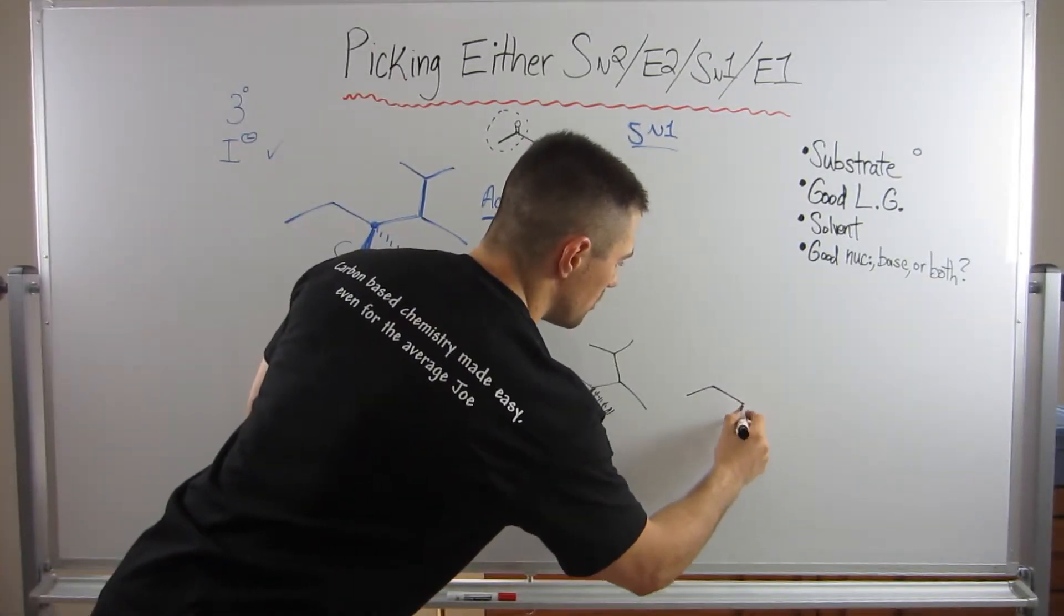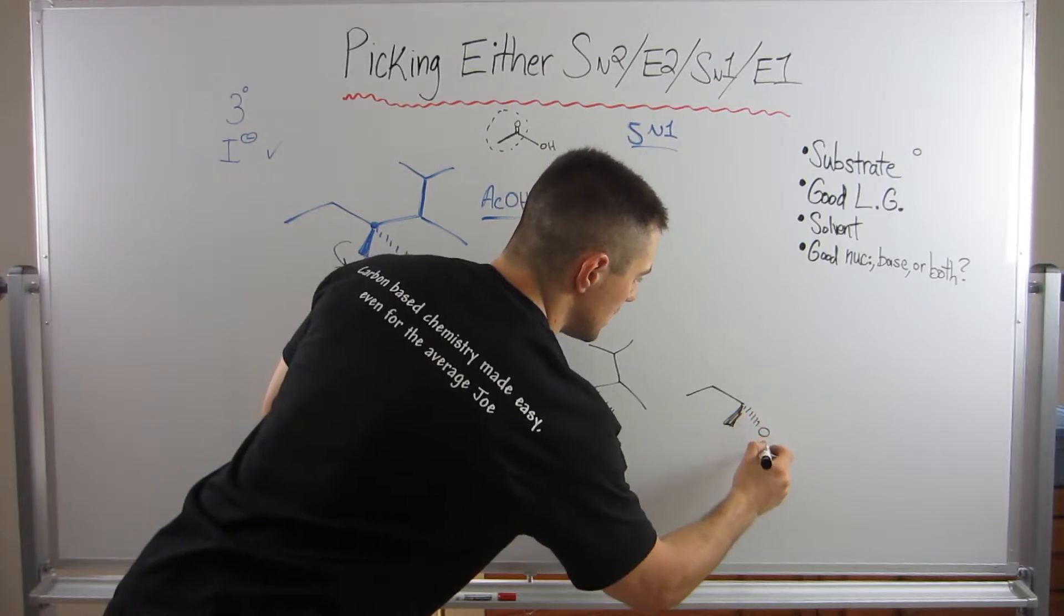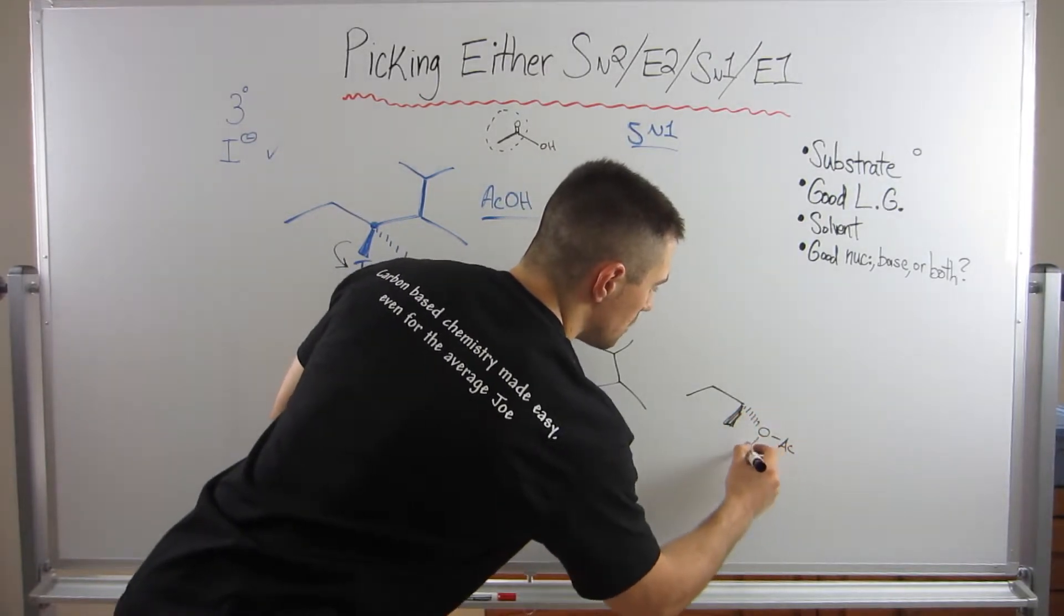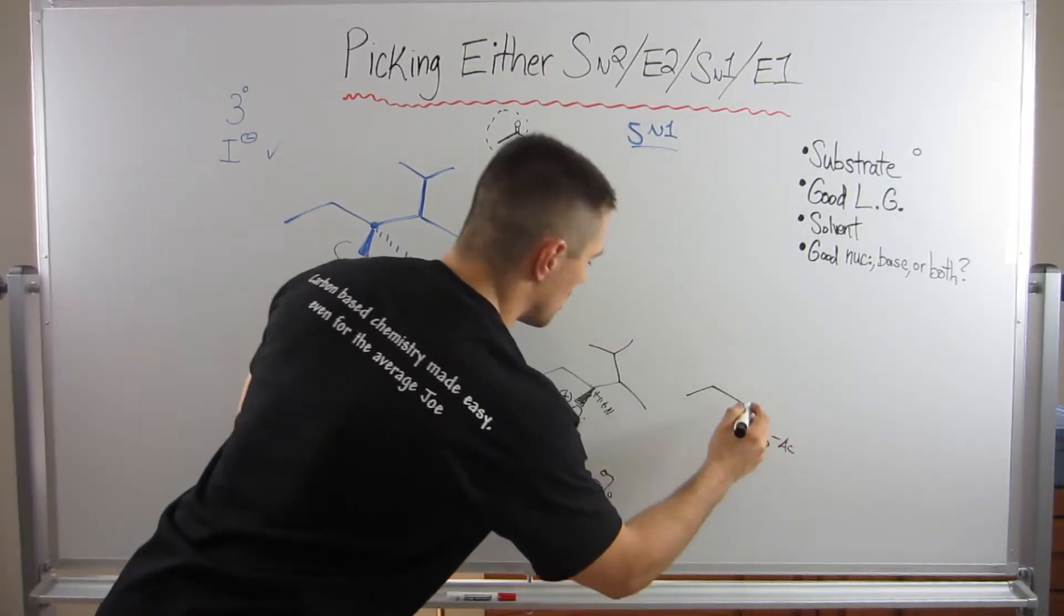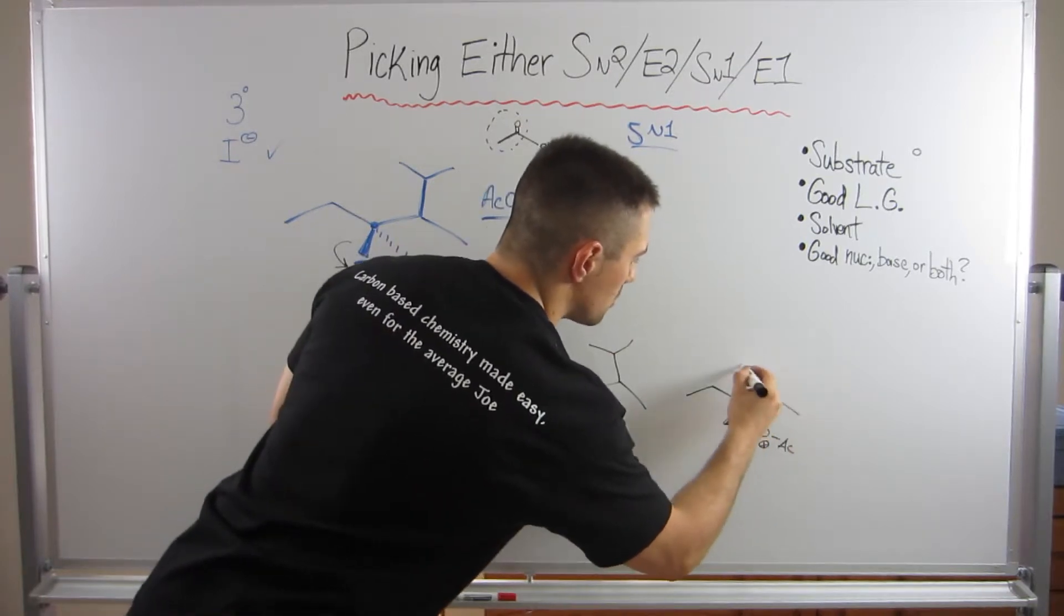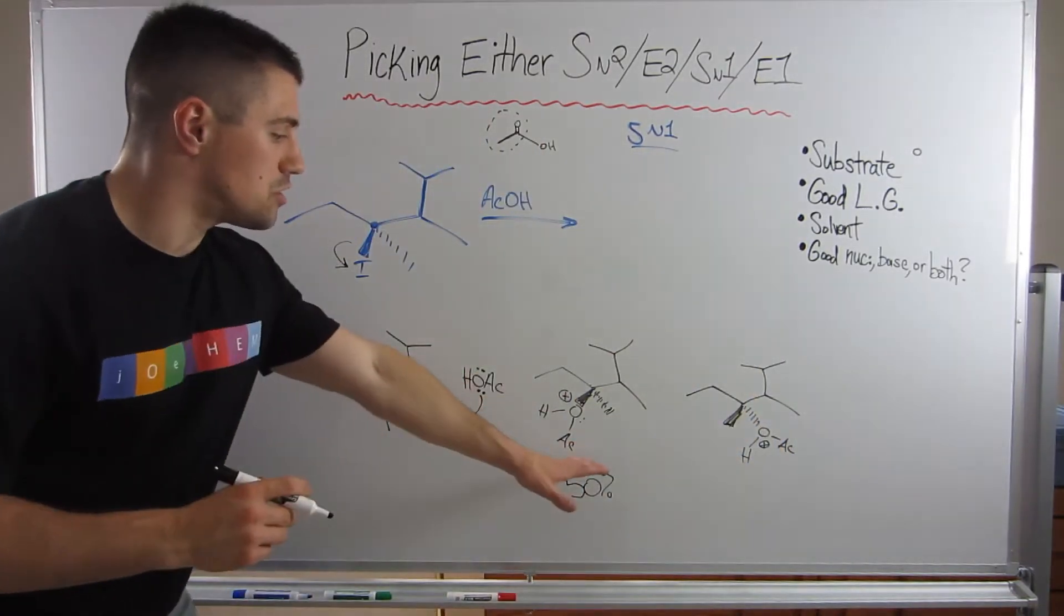I'm just going to switch them. So the methyl group will be wedged. The acetic acid will now be dashed because attack happens on top and bottom in equal amounts. These will be the two products.